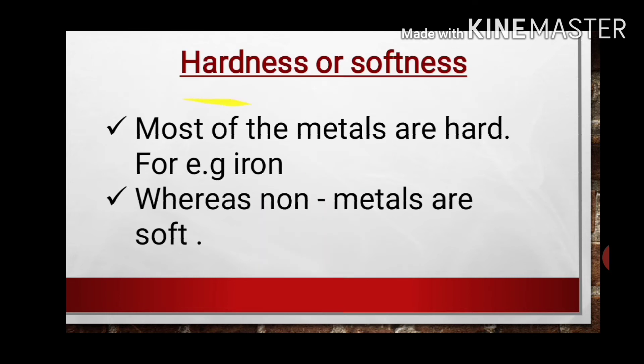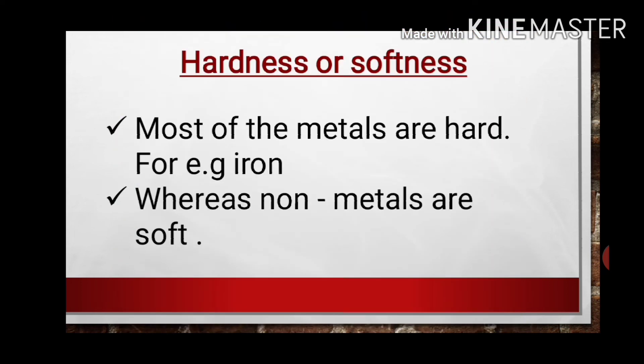The next property is hardness and softness. By touching or looking at a material, you can use this property to identify whether it is a metal or non-metal. Most metals are hard — iron objects are very hard, confirming that metals have the property of hardness. Whereas non-metals are soft; take the example of graphite used in pencil lead. Under pressure, it converts into powder form, confirming that non-metals are soft. This property can be used for distinguishing between metals and non-metals.